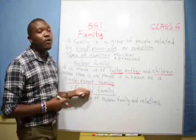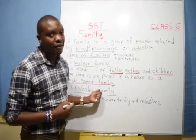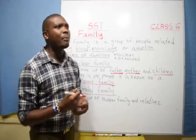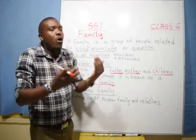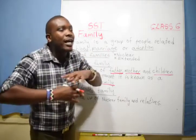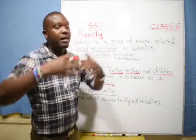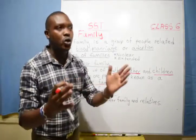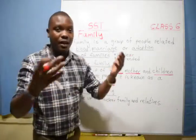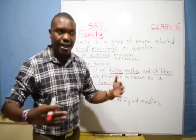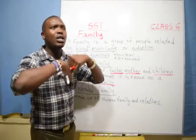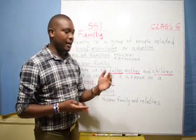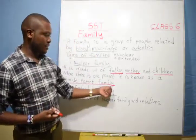The other type of family is the extended family. The extended family is made up of the nuclear family — father, mother, and children — together with the relatives. The relatives can either be the aunts, the uncles, the cousins, the nephews, the nieces, and the grandparents.